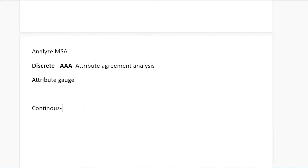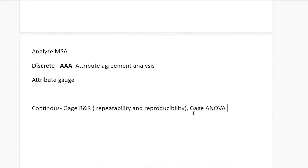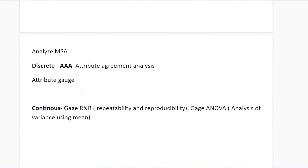For continuous data, we use Gauge R&R — Repeatability and Reproducibility — also called Gauge ANOVA, because it uses the method of ANOVA (Analysis of Variance). At Green Belt level, if someone asks how you do MSA: for discrete data use Attribute Agreement Analysis; for continuous data use Gauge R&R. Simple.